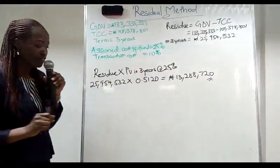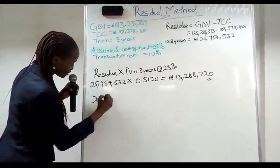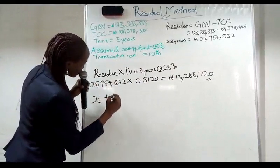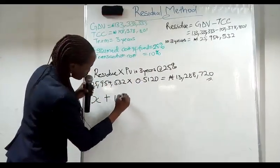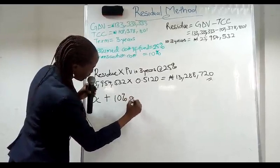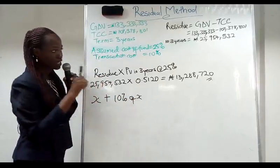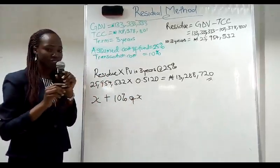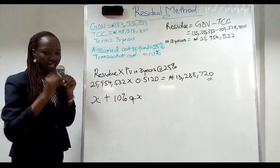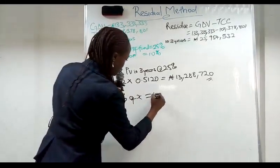Now to get our site value is X plus transaction cost assumed to be 10% of X. Our transaction cost here also consists of our agency fee, our legal fee and other fees which is equal to budget.